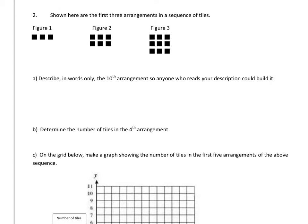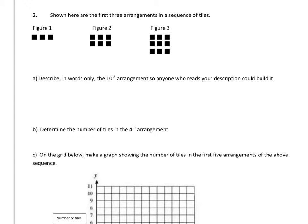Number two shown here are the first three arrangements in a sequence of tiles. So when I look at this, I'm looking for patterns again. I see a row of three. Then I see two rows of three. Then I see three rows of three.